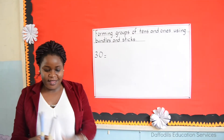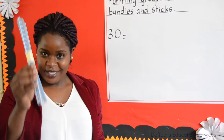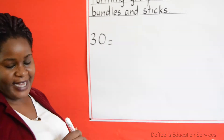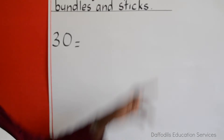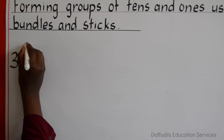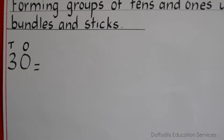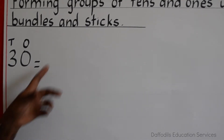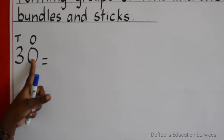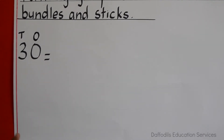What about 2 tens? 2 tens equals 20. What about 1 ten? 1 ten equals 10. Now, we are looking at how we can group in 10s and 1s. The first thing we think of is place values. We first allocate place values — these are the 1s, these are the 10s. When it comes to drawing bundles and sticks, we look at how many 10s we have and how many 1s we have. With 10s, we draw the bundles. With 1s, we just draw the sticks.